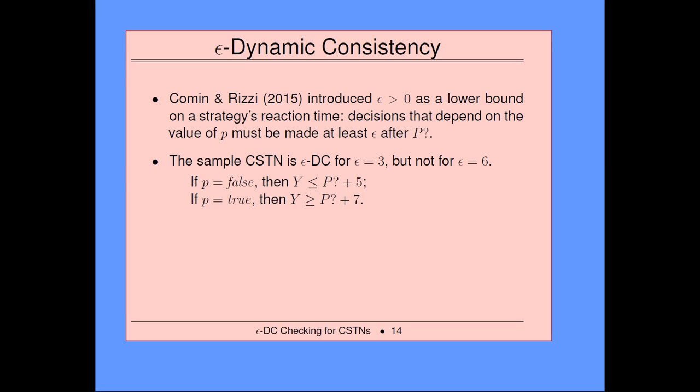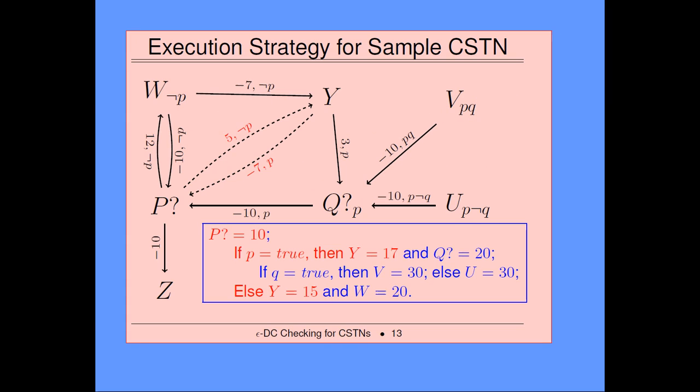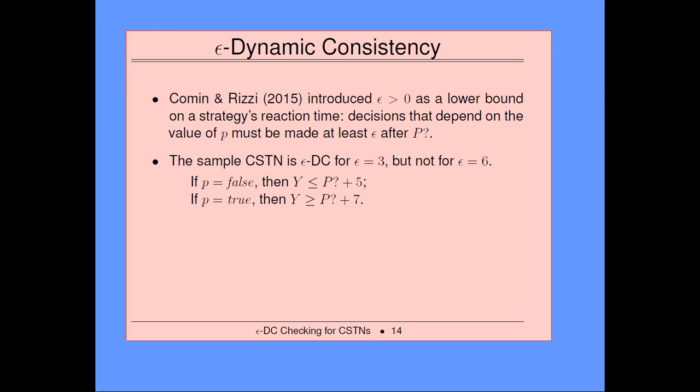The key thing here is that the reaction time: you execute P at time 10, and we have to make a decision within 5 units because we want to make sure we don't violate this upper bound constraint. If we had to react before time 5 elapses, we'd run into problems because we wouldn't know the truth value of P. Komen and Rizzi introduced epsilon greater than 0 as a lower bound on a strategy's reaction time: decisions that depend on the value of P must be made at least epsilon after you learn the value of P.